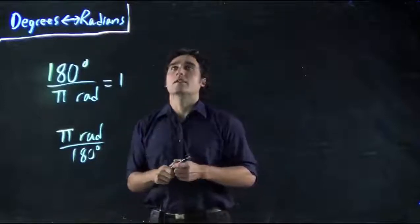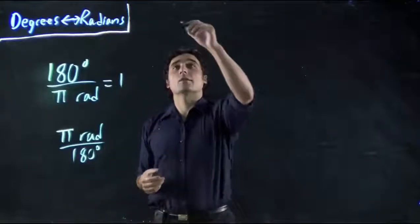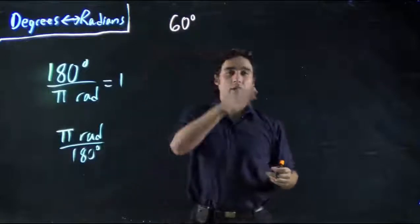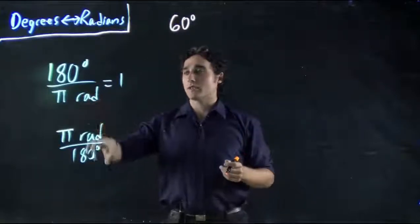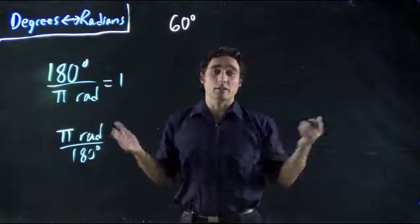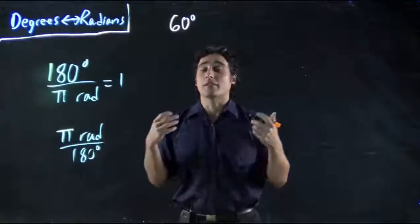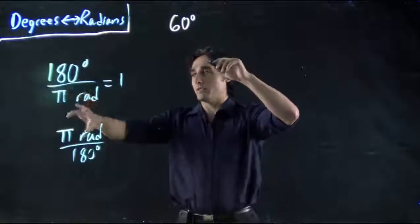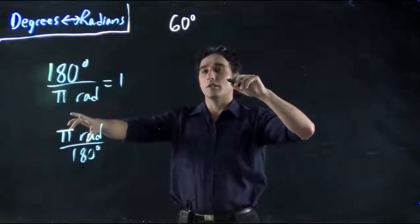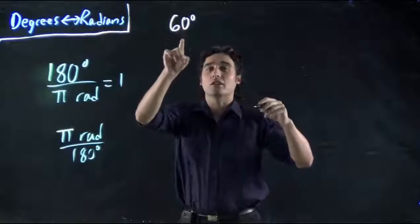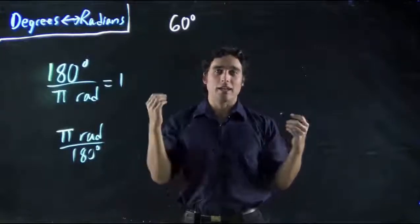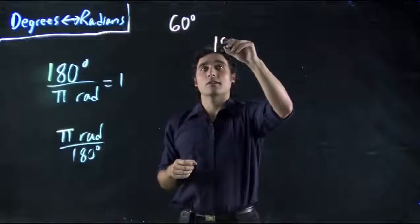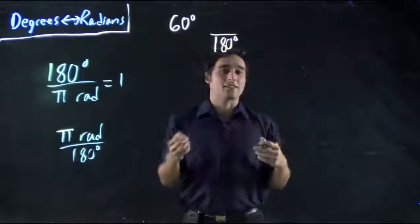So let's take a look. Let's say we started with something like 60 degrees. If I want to convert this to radians, I'm going to use this ratio. Again, I'm allowed to multiply by one, because I'm not technically changing it. I'm just doing it creatively. So the thing to keep in mind is which of these two forms are we going to use? Well, I've got degrees on top. I want to get rid of degrees and end up with radians. So I have to put the degrees on the bottom.